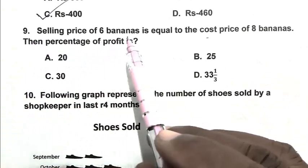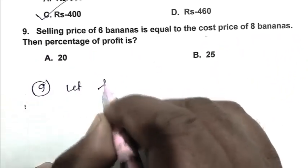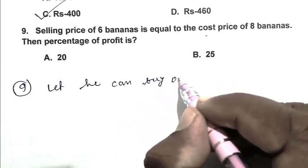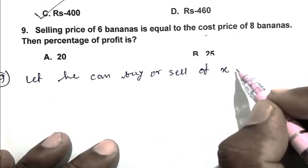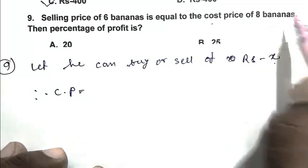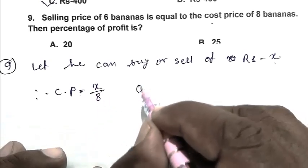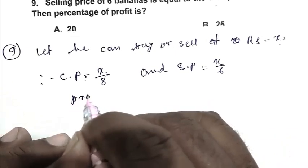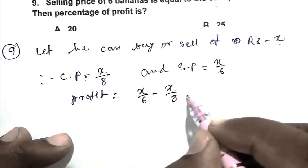Question number nine: Selling price of 6 bananas is equal to cost price of 8 bananas. Then percentage of profit is? Let the cost price per banana be X. So SP of 6 bananas equals X upon 6, and CP of 8 bananas equals X upon 8. Profit equals X upon 6 minus X upon 8.